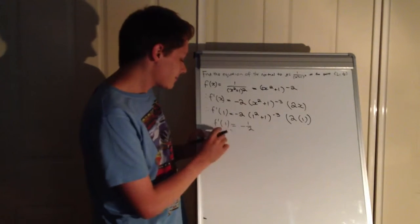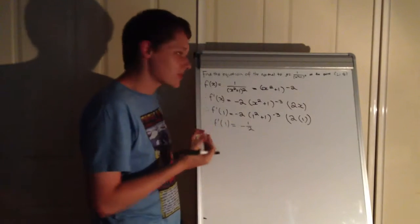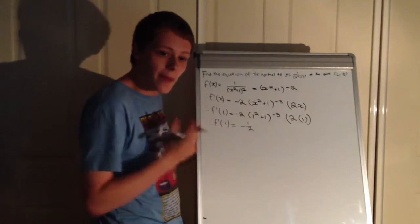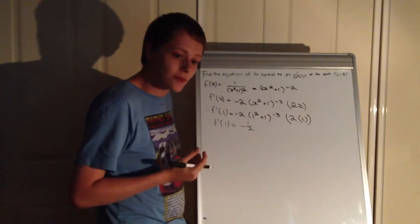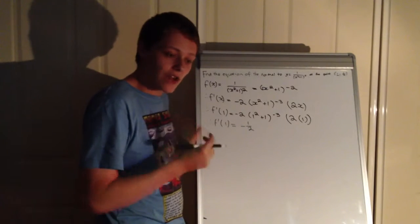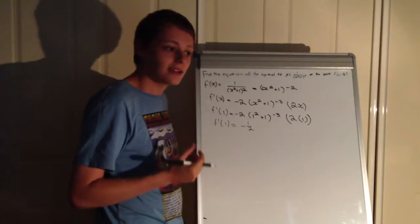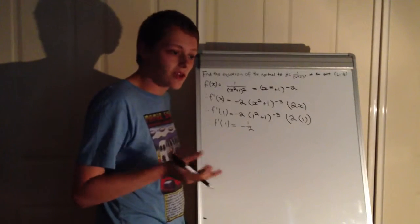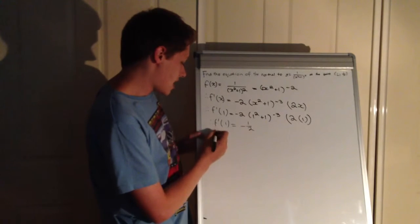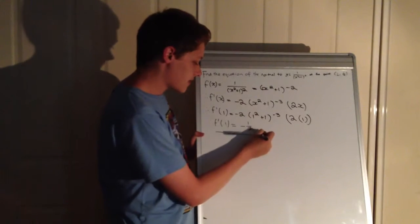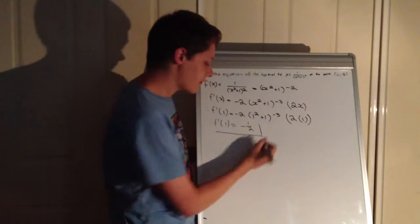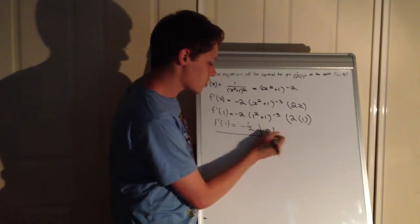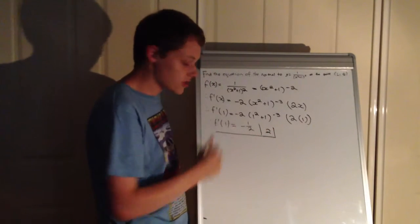What we do now is we need to inverse this because we're looking at the normal. You may remember, if you've worked with linear algebra before, that the gradient of a perpendicular line is -1 divided by m, where m is the original line. So if that's the case, we get from this, instead of it being -1/2, it will become 2. Which is pretty cool.